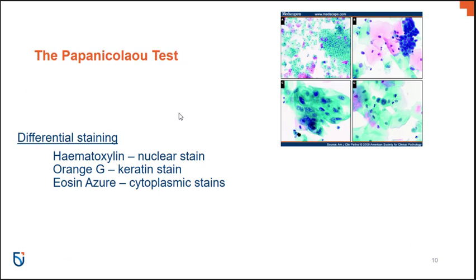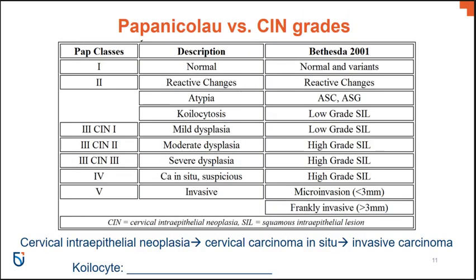This image shows the differential staining that's done. It's important to have contrast between the different structures you're looking at within cells because otherwise they can look very similar. Hematoxylin is a stain to look more closely at the nucleus; Orange G is a keratin stain; and Eosin Azure allows for better observation of the cytoplasm of the cell. Just be aware that staining is important — I won't ask specific questions from this slide as this isn't a focused med-lab course.